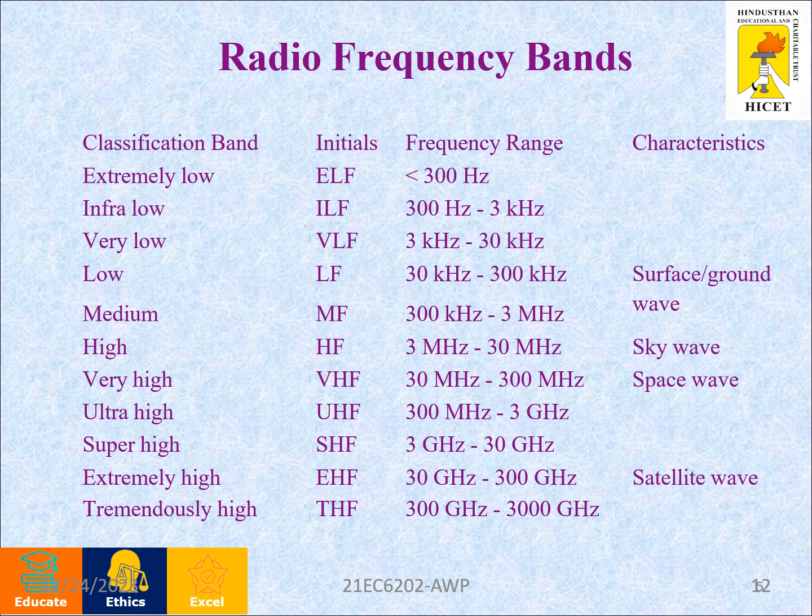Radio frequency bands — classification of bands ensures frequency range and their characteristics. Extremely low frequency (ELF): below 300 Hz. Infra low frequency (ILF): 300 Hz to 3 kHz. Very low frequency (VLF): 3 kHz to 30 kHz. Low frequency (LF): 30 kHz to 300 kHz — characteristics are surface and ground wave. Medium frequency (MF): 300 kHz to 3 MHz.